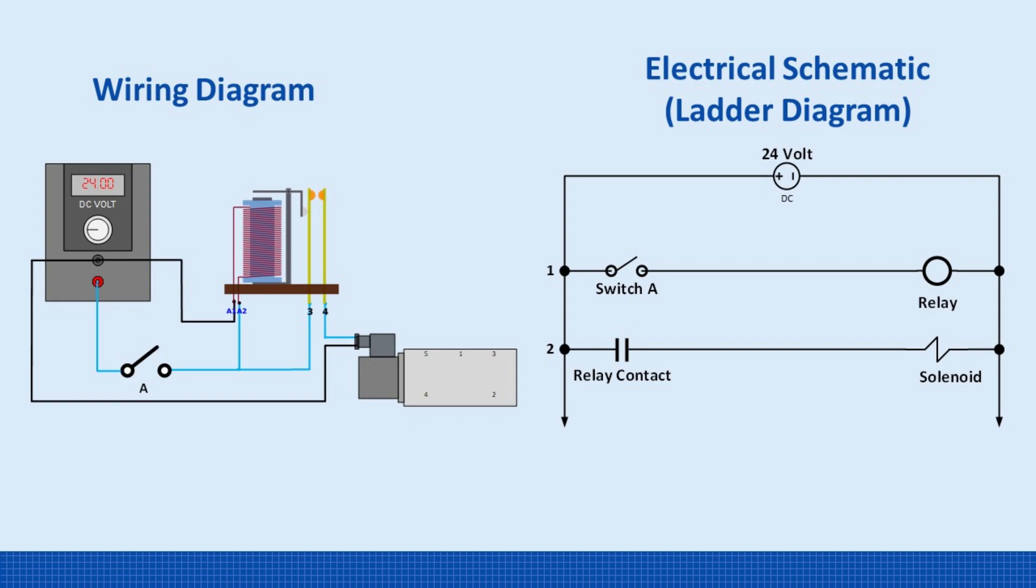On the first rung, when the switch closes, it energizes the relay coil. Then on the second rung, the relay's normally open contact closes, and that powers the solenoid valve. So when the relay is energized, its contacts close, allowing current to flow to the solenoid.